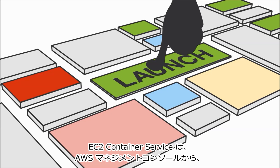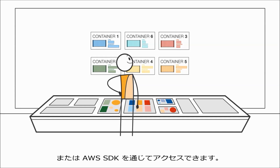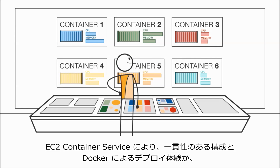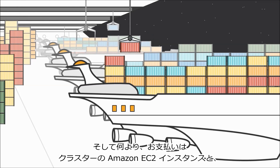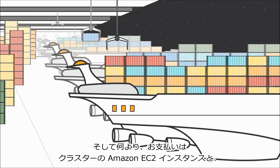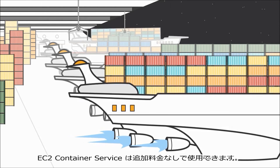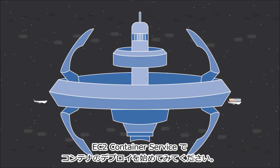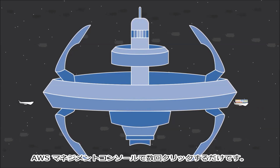You can access EC2 Container Service from the AWS Management Console or through the AWS SDKs. EC2 Container Service combines the consistent build and deploy experience of Docker with all the benefits of Amazon EC2. And best of all, you just pay for the Amazon EC2 instances in your cluster and any other AWS resources used. There's no additional charge for using EC2 Container Service. Get started deploying containers on EC2 Container Service with a few clicks in the AWS Management Console.